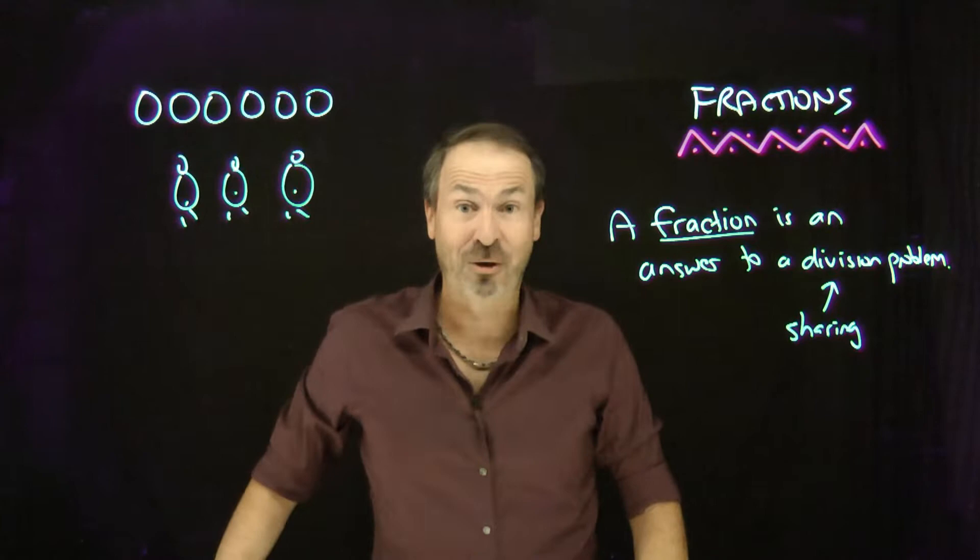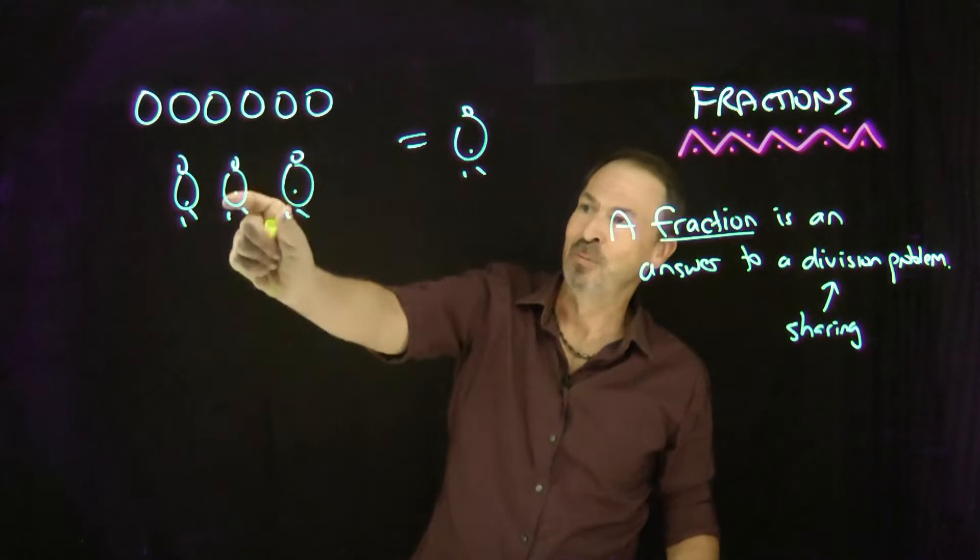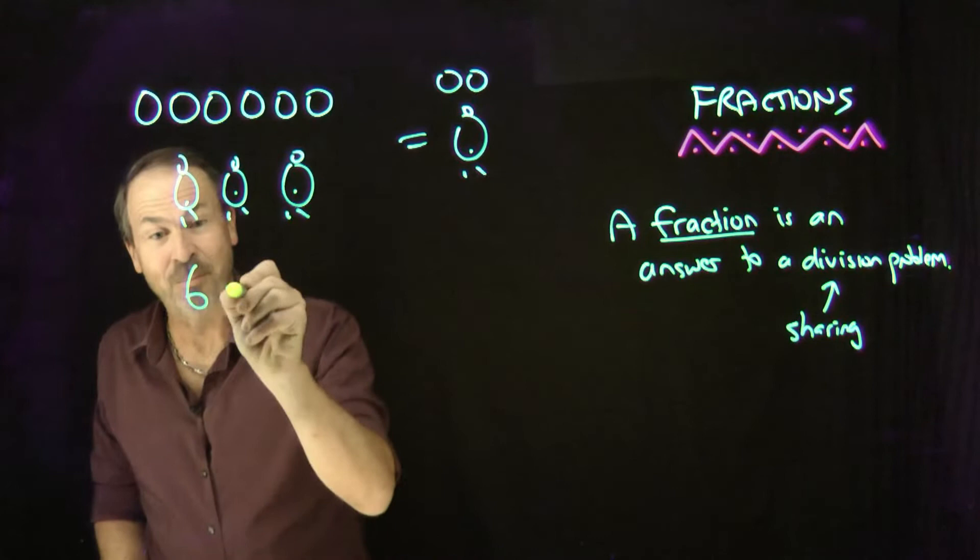Six pies to be shared equally among three students. How much pie per student would that be? What would one individual student receive? Well, you see in mind's eye, two pies, two pies, two pies per student. That is two pies per student.